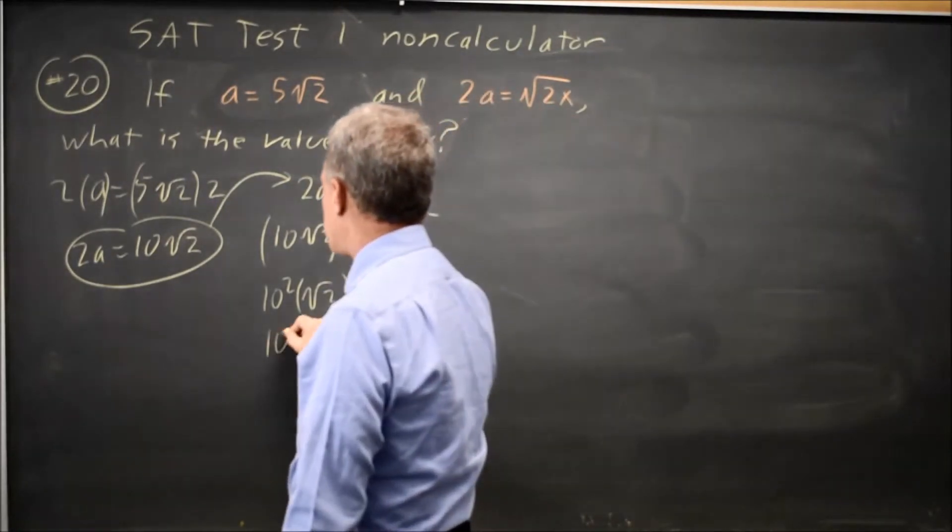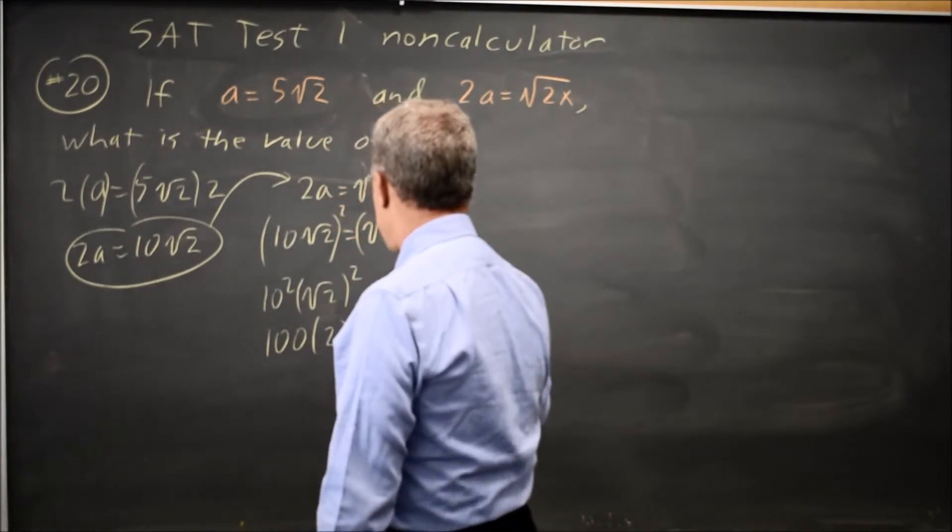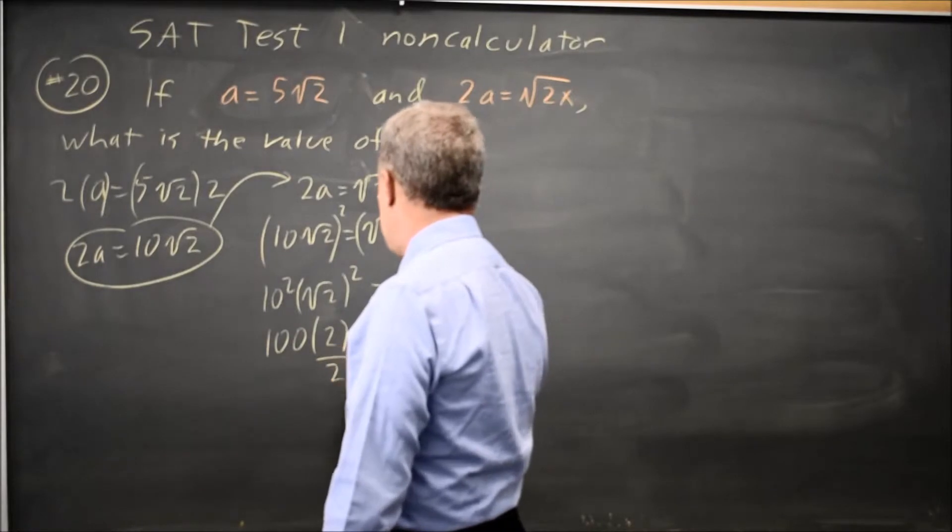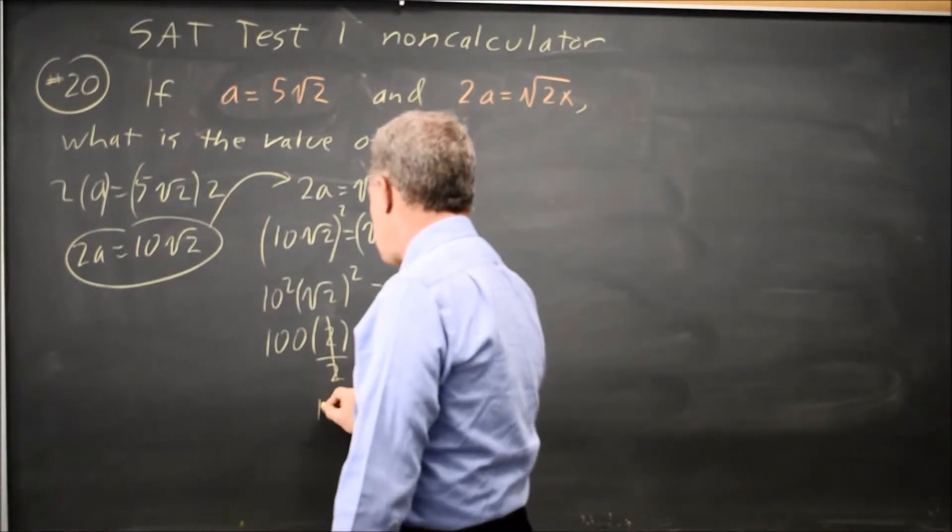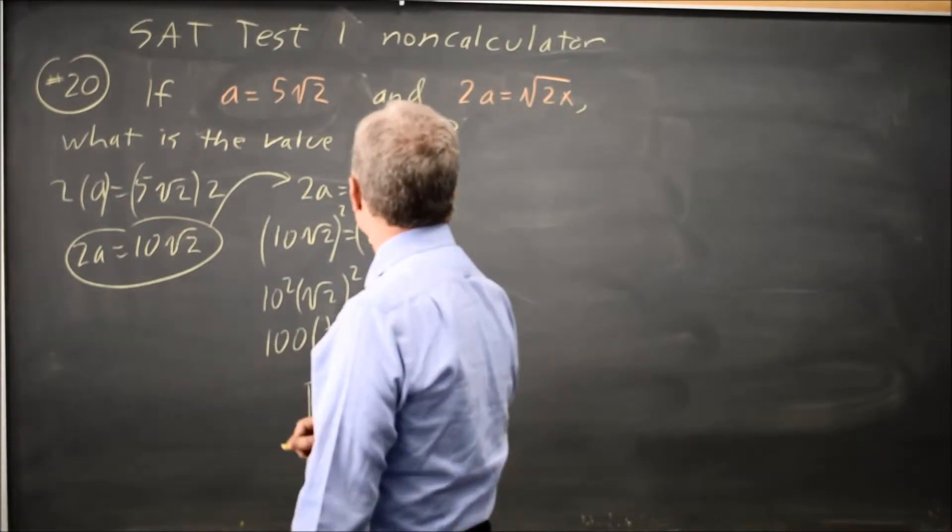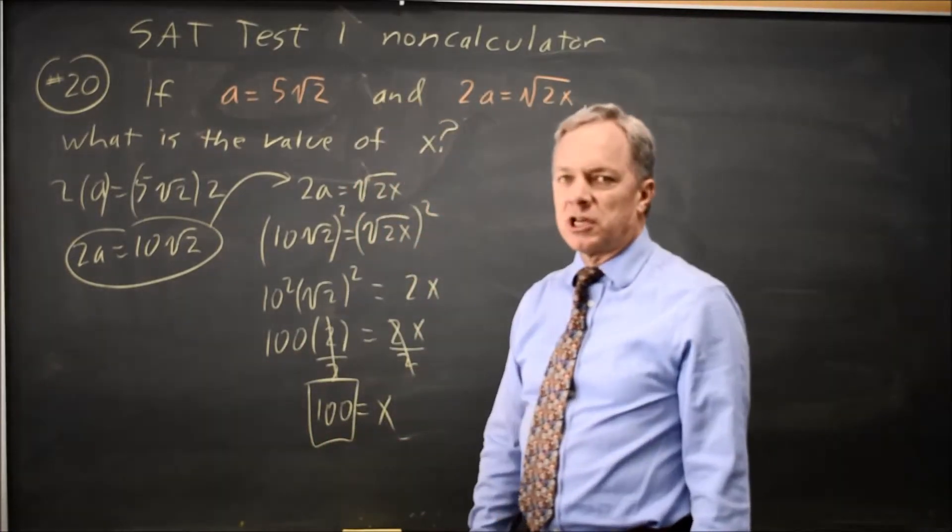10 squared is 100, root 2 squared is 2. So 100 times 2 equals 2X. Divide both sides by 2. 2 over 2 is 1. I get 100 equals X. And the answer we're looking for is 100.